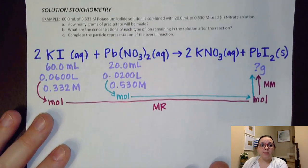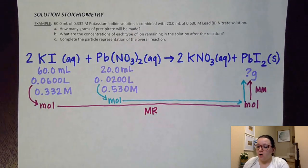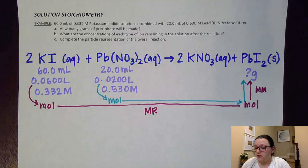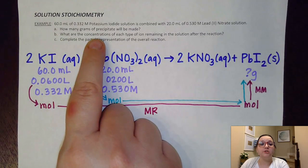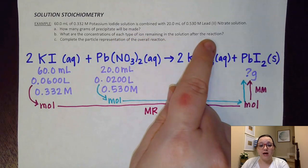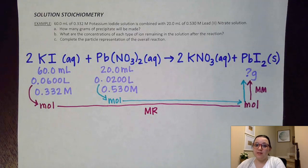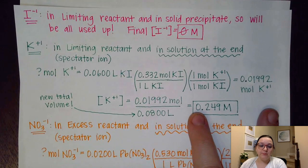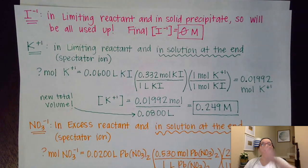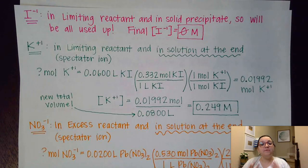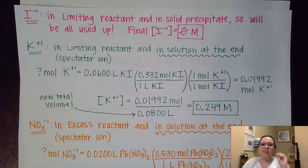We've already addressed the grams of precipitate and completed the particle representation. Now we need to calculate the concentrations of each ion remaining in solution after the reaction. One of these is really easy — iodide. Iodide was in the limiting reactant, and all of it went into the solid precipitate, so it all gets used up. The final concentration of the iodide ion at the end will be zero molarity. Any time your ion is in the limiting reactant and all goes to the precipitate, that ion will be zero molarity at the end.